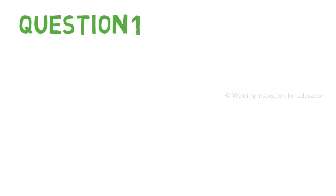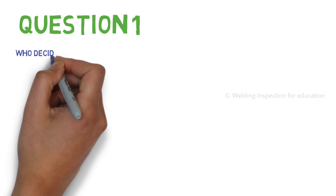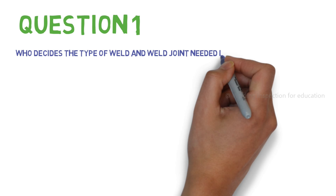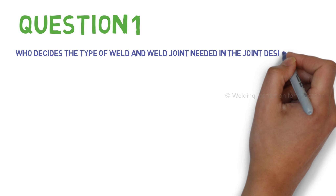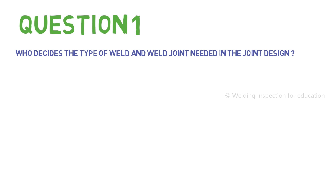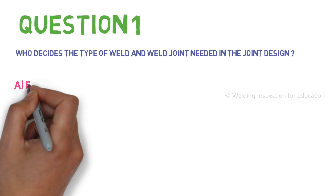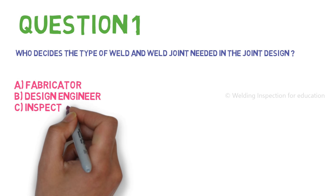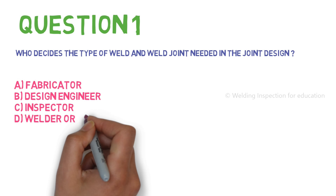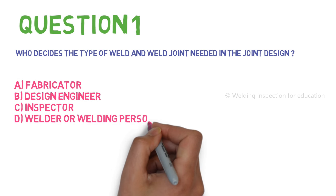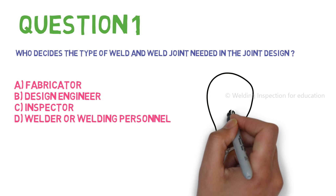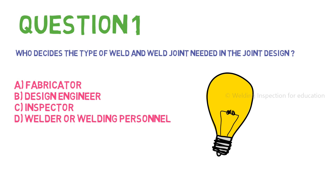Let's review some questions. Question number one: who decides the type of weld and weld joint needed in the joint design? A. Fabricator, B. Design engineer, C. Inspector, D. Welder or welding personnel.